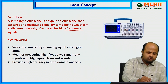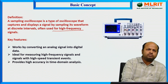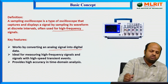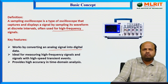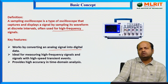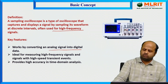What are the key features of a sampling oscilloscope? First, it converts the analog signal to digital data. Then it performs sampling, and after sampling it displays the waveform. These are the key features of a sampling oscilloscope.